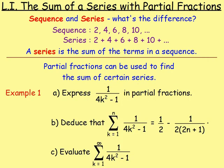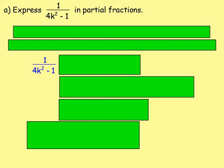Let's look at example number 1. Part A: express 1 over 4k² − 1 in partial fractions. Part B: show that the sum of 1 over 4k² − 1, going from k = 1 up to n, equals 1/2 − 1 over 2(2n + 1). And part C: evaluate the sum of 1 over 4k² − 1 going from k = 1 all the way up to infinity.